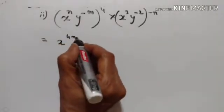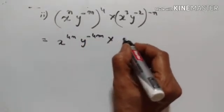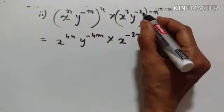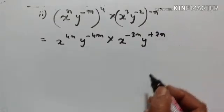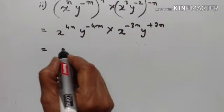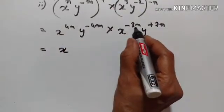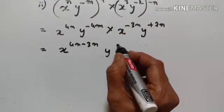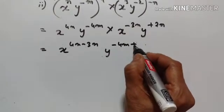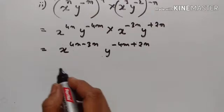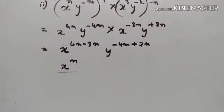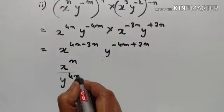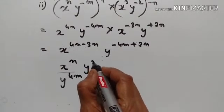x raised to the power of 4n, into y raised to the power of minus 4m, into x raised to the power of minus 3n, y raised to the power of plus 2n. This gives x raised to the power of 4n minus 3n, y raised to the power of minus 4m plus 2n. So x to the power of n; since we have y raised to the power of minus 4m, we keep it in the denominator to make it positive: y raised to the power of 2n.